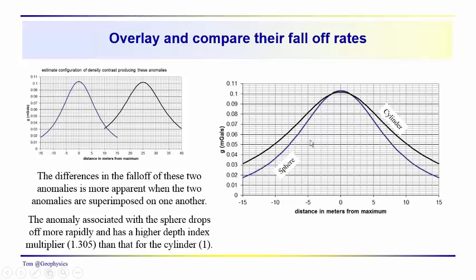So the depth index multipliers also give you some indication of the drop off rate for these different shapes. So the sphere is the most compact form that you can get, converging to a point. The cylinder in two dimensions would be the most compact form that you could get converging to a pencil or a line.